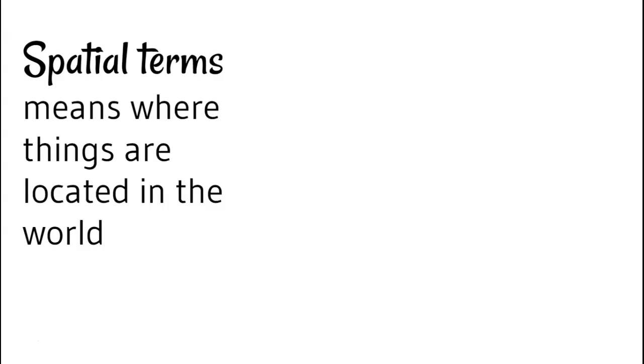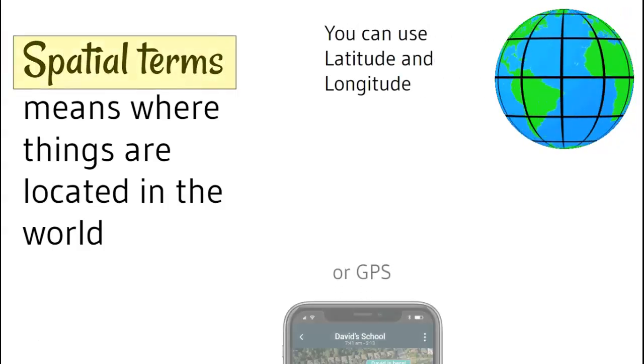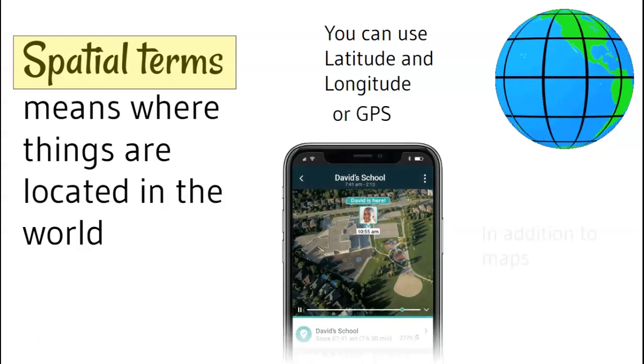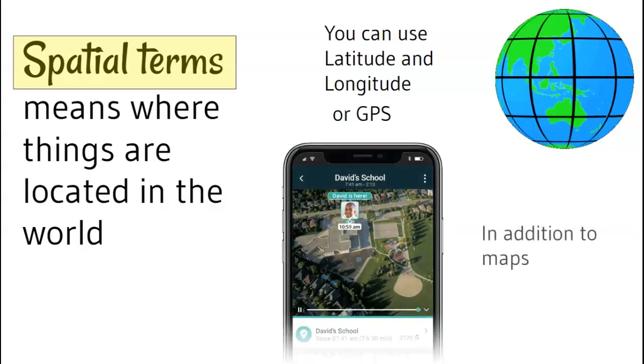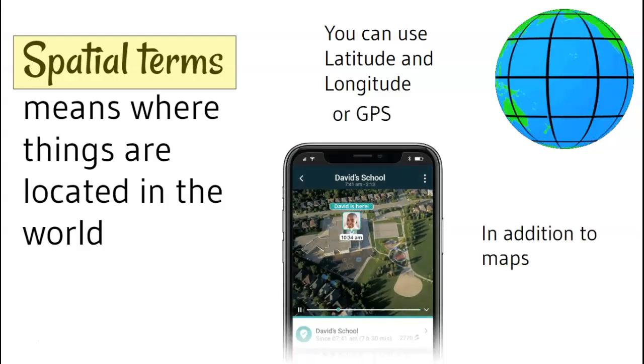Spatial terms mean where things are located in the world. You can use latitude and longitude, global positioning system, or maps to determine where things are located.